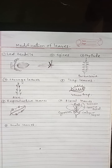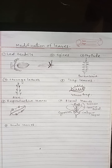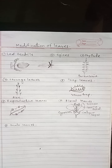Scale leaves: in many xerophytes, the foliage leaves are reduced to scale leaves. They are thin, membranous, dry, small, sessile (meaning without petiole), and colorless structures. They are found in Orobanche and Balanophora. This is all about the modification of leaves. We have now completed unit one. Thank you.